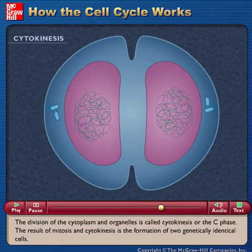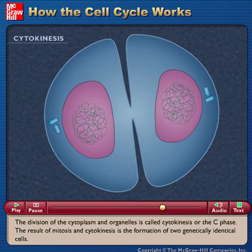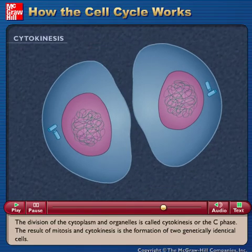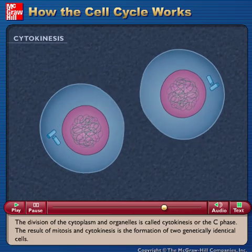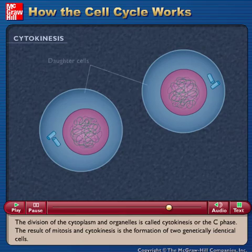The division of the cytoplasm and organelles is called cytokinesis or the C phase. The result of mitosis and cytokinesis is the formation of two genetically identical cells.